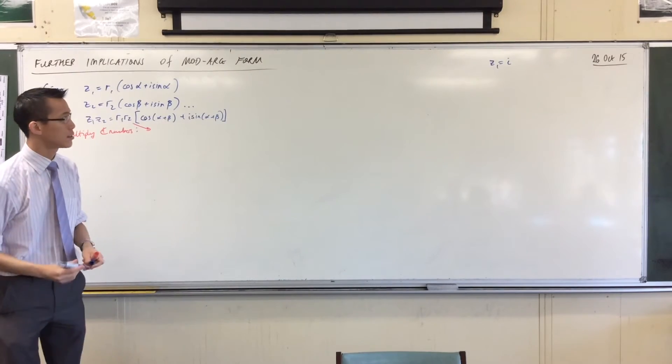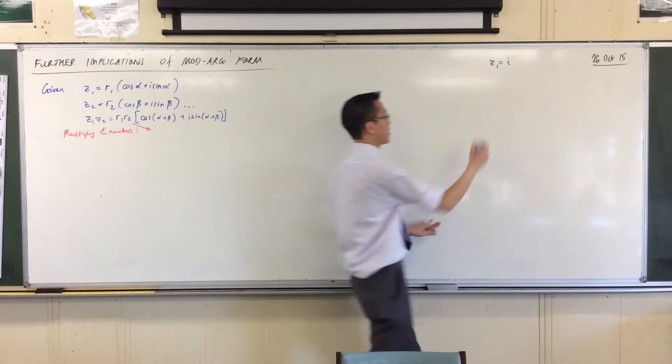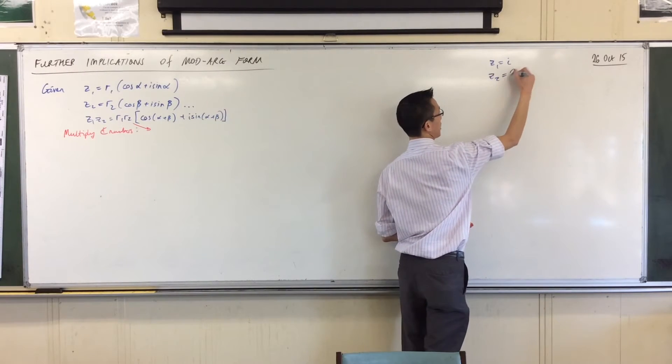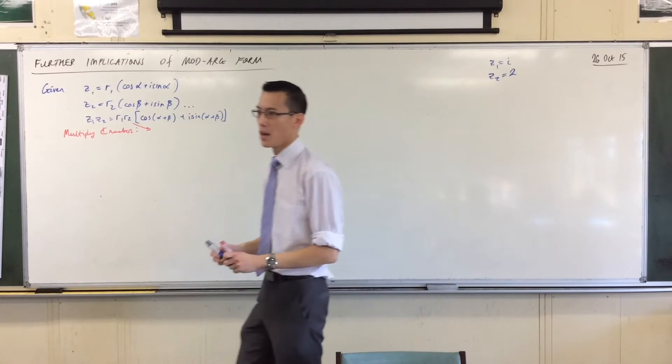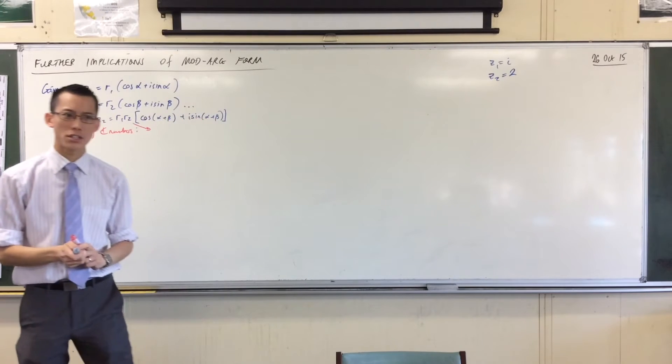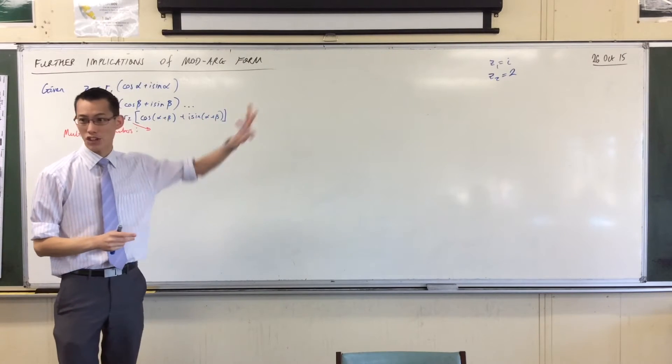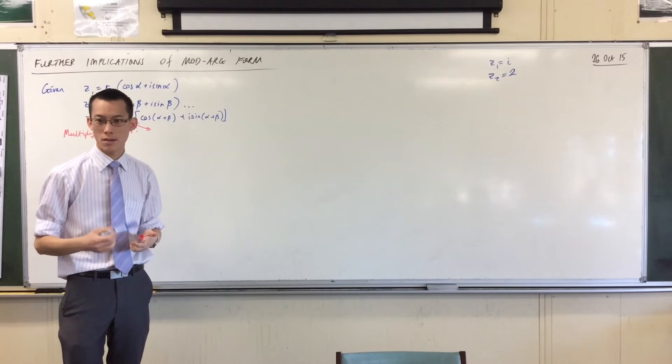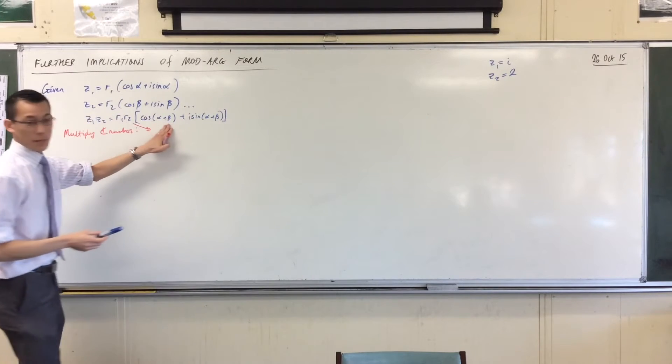Now if I multiply that by another simple complex number like say 2, no rotation is happening. Why is no rotation happening when I multiply by 2? Because what's the argument that I add? What's the argument of 2?